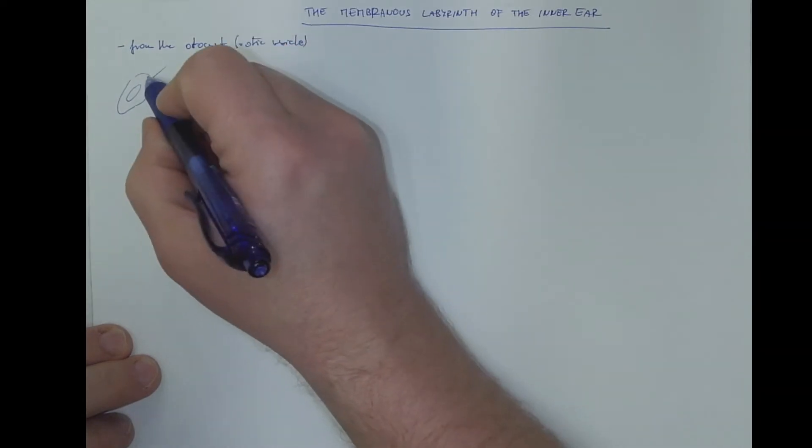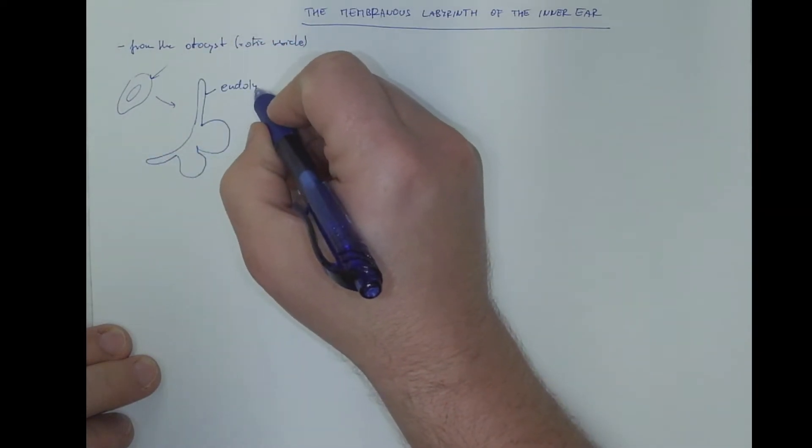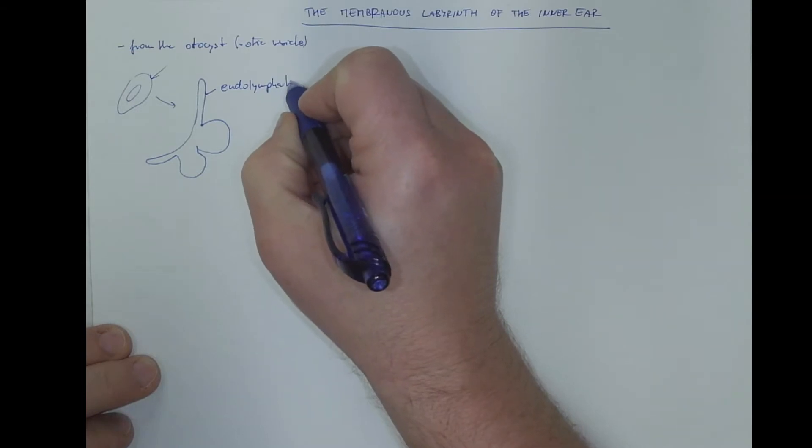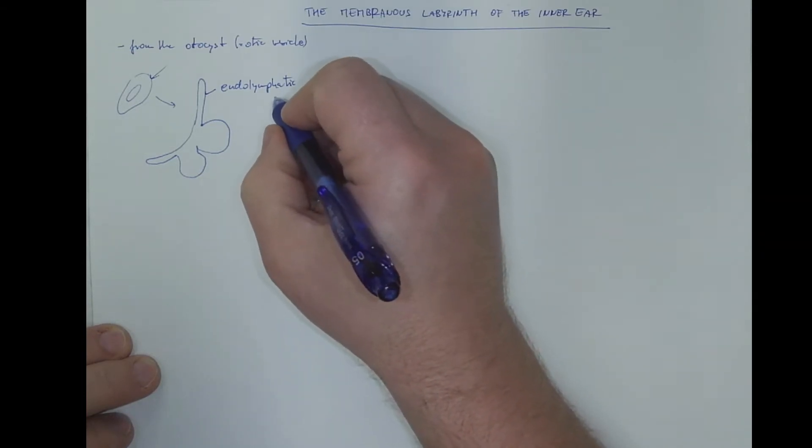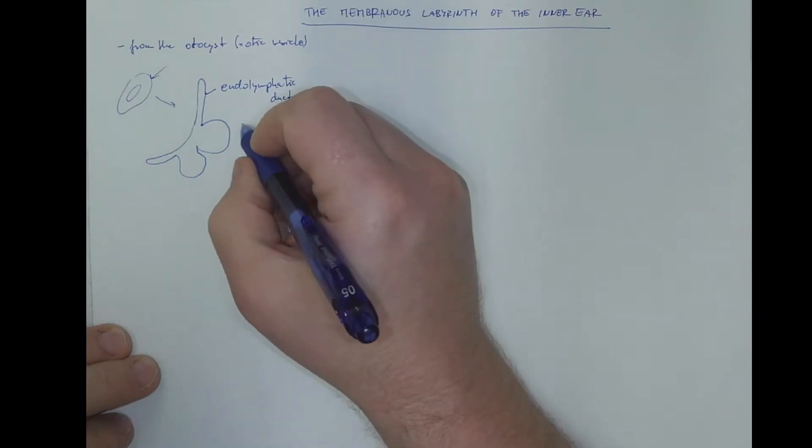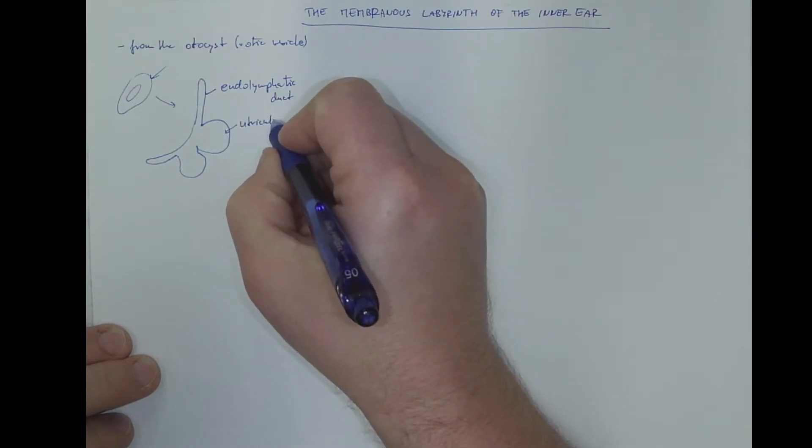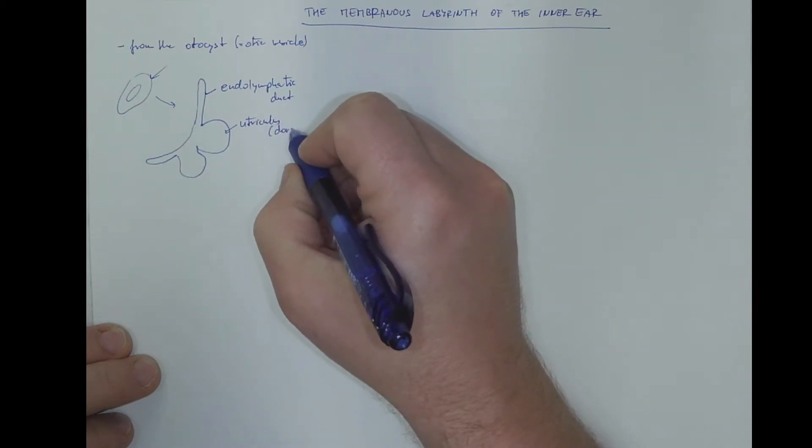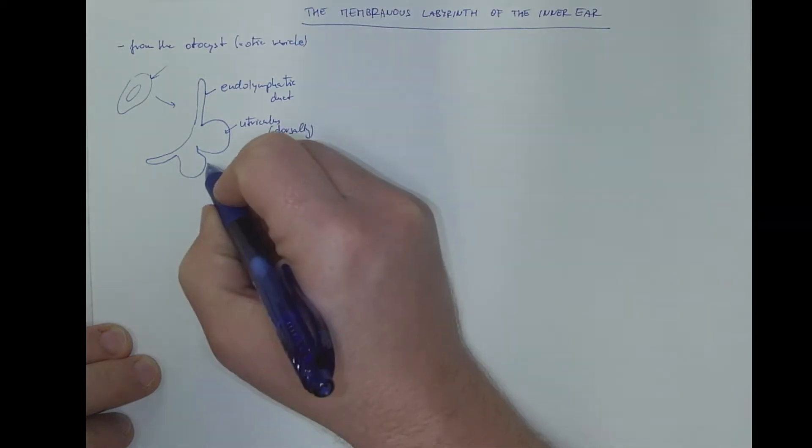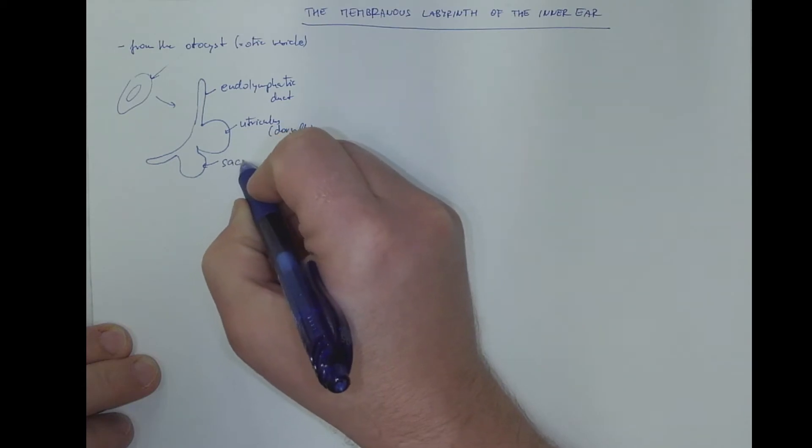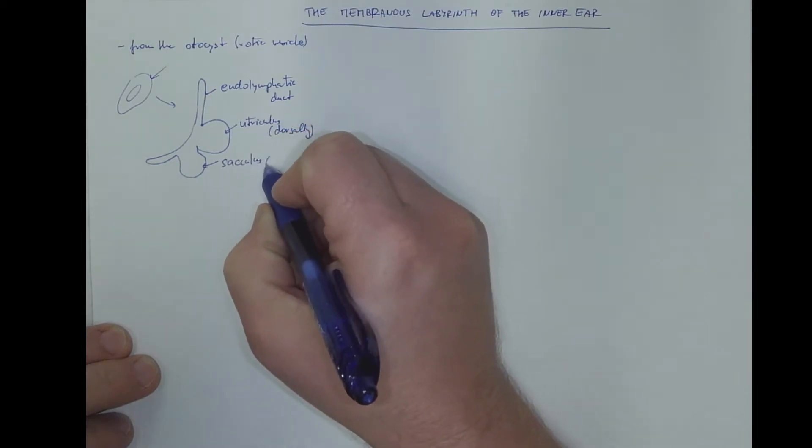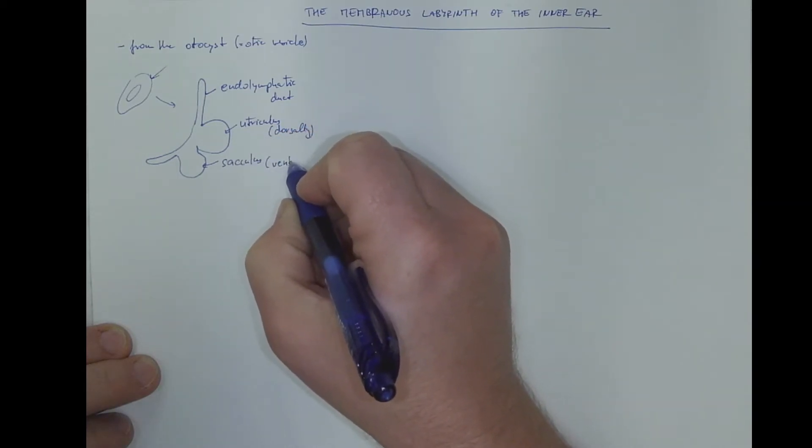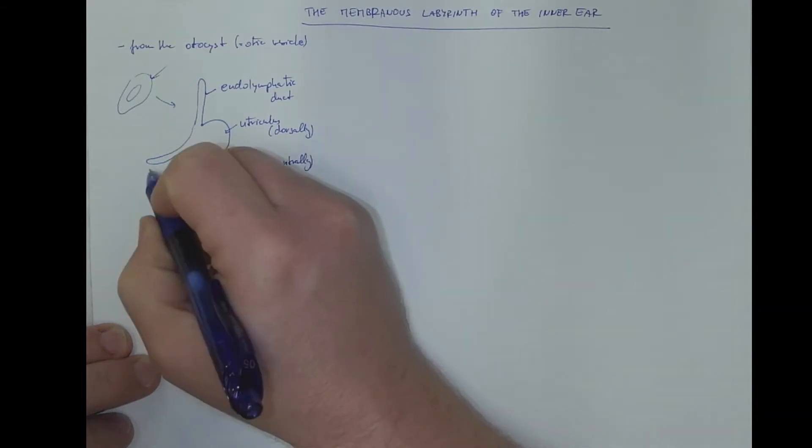This is the otocyst, this is the endolymphatic duct, the utriculus more dorsally, the sacculus more ventrally, and primordium of the cochlea.